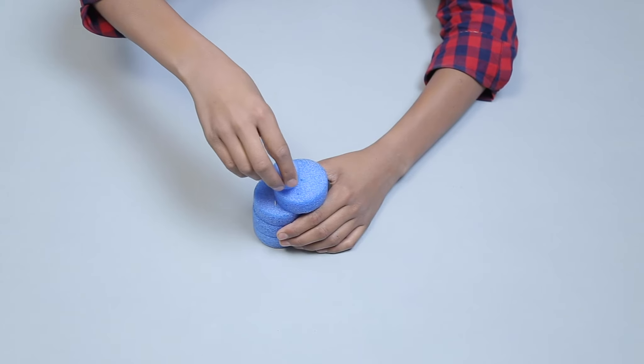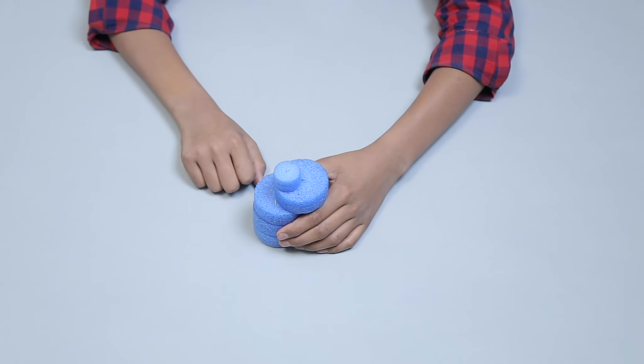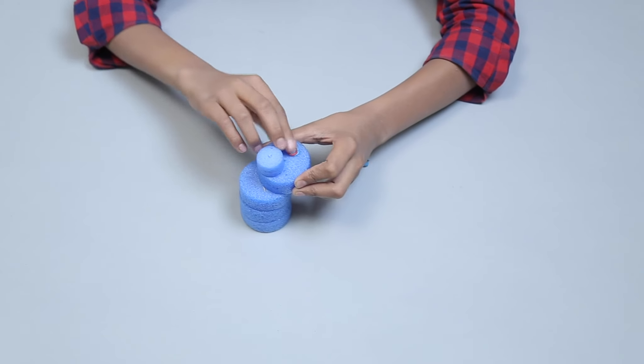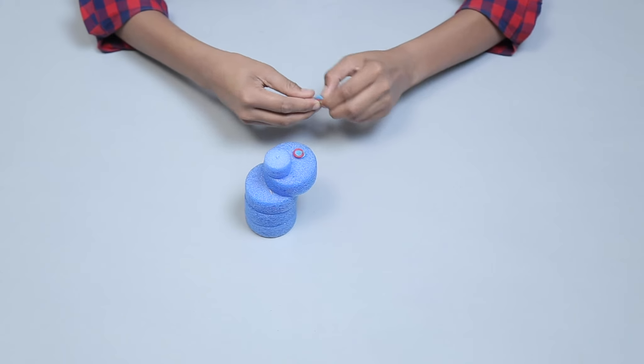Then, attach one small foam wheel in the center to show the nose. To make the eyes, attach plastic links with sticky tags.